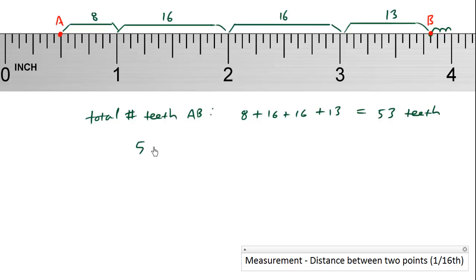So we know that each tooth is going to be 1/16th of an inch. So what we get here is a distance of 53 over 16, which is the same as 3 inches and 5/16ths.